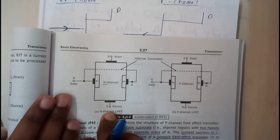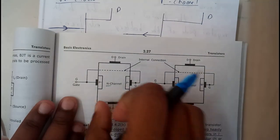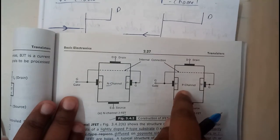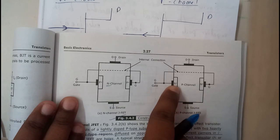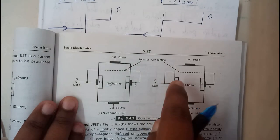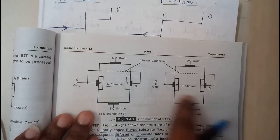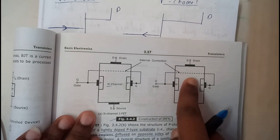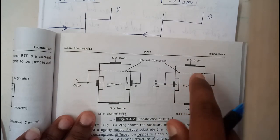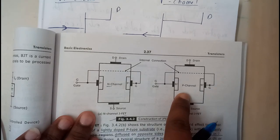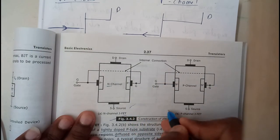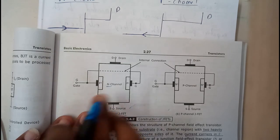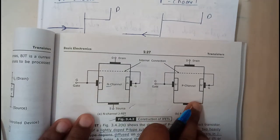Similarly, in place of n, place p, and in place of p, place n. So you get a diagram like this. Here the major quantity is p-channel, hence this is a p-channel JFET. Now I hope everyone is clear with both the diagrams of n-channel JFET and p-channel JFET.